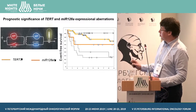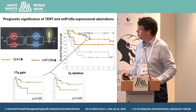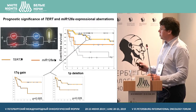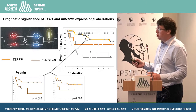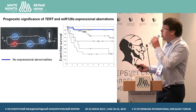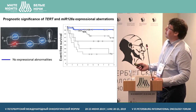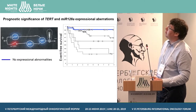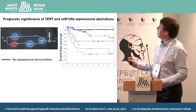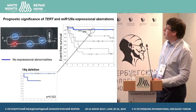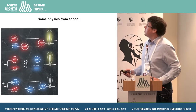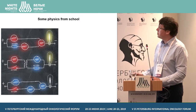Survival rates for patients harboring one expression abnormality — either high TERT expression or down-regulation of microRNA-128a — had intermediate survival. This group with high TERT was significantly heterogeneous, and standard cytogenetic aberrations such as 17q gain or 1p deletion gained additional prognostic significance in this group. The most favorable group of patients are those who retained microRNA-128a expression and had no abundant TERT expression; these patients had excellent outcome, and only two patients with 14q deletion had events.